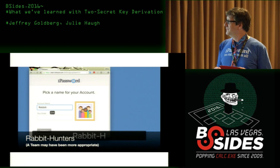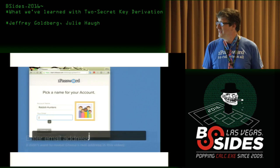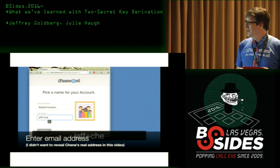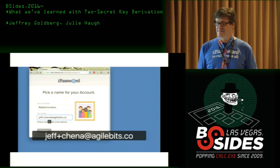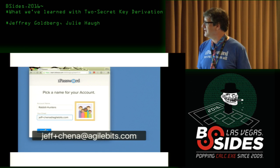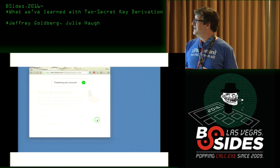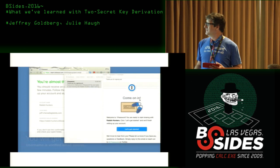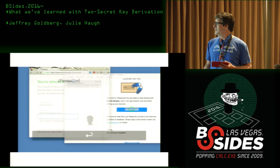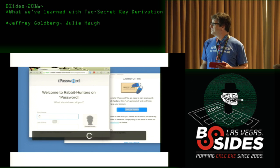She goes through a normal sign-up. She selects a family name and has to give her email address. She'll be given a URL based on that name, and she gets told she'll receive some email. There's her email. Real name — this is me speeding up the video because I type really slowly, but Chena types even slower.